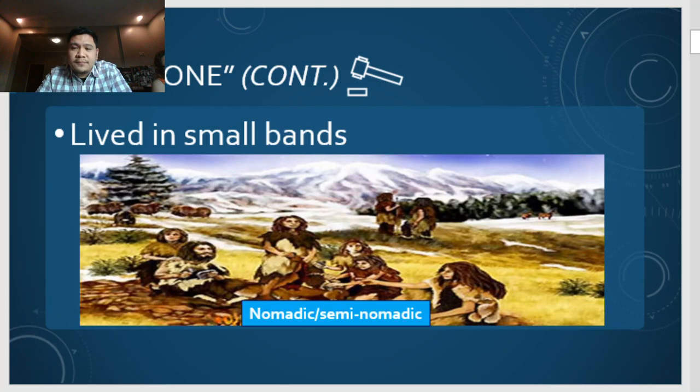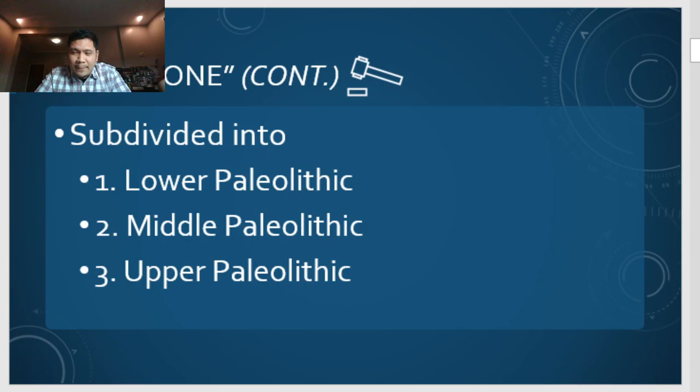Nomadic means constantly moving from place to place. Semi-nomadic means they would stay in an area while there are resources, then move once resources are depleted. The Paleolithic or Old Stone period is further subdivided into three: the Lower Paleolithic, the Middle Paleolithic, and the Upper Paleolithic.